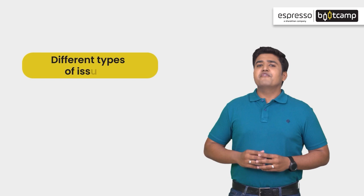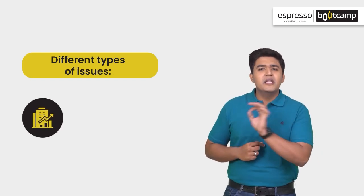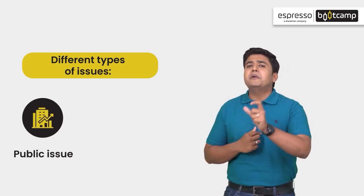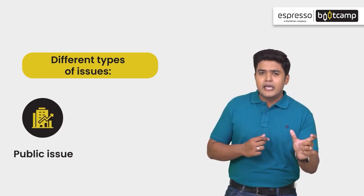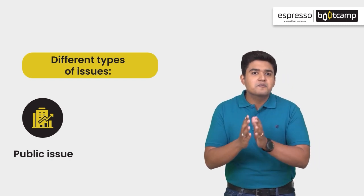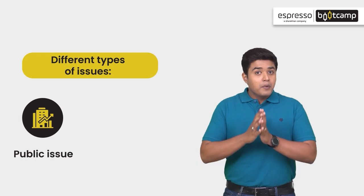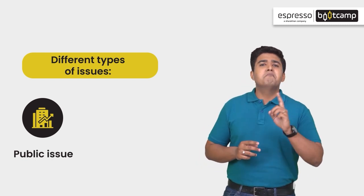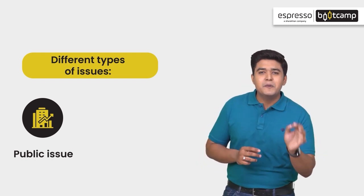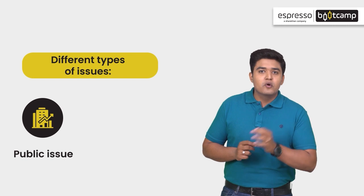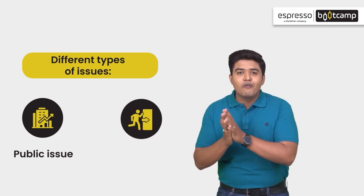Now we have learned what an IPO is. Let's take a look at the different types of IPOs. Number 1: Public Issue. When a company raises capital by issuing shares and debentures to the public, it is called a Public Issue. Public Issue is of two types: first is IPO, and second is FPO, or Follow-on Public Offer.